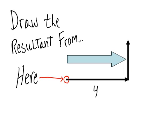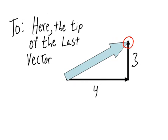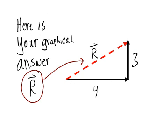...the resultant from here, the former vertex, to here, the tip of the last vector. Here is your graphical answer.